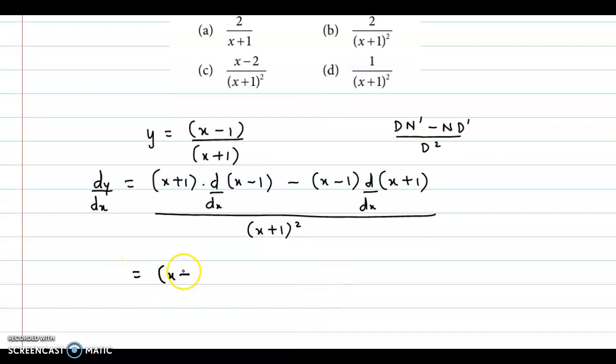here I have x plus 1 into, the derivative of x is 1 and of 1 is 0, so overall derivative I have 1 minus x minus 1 into